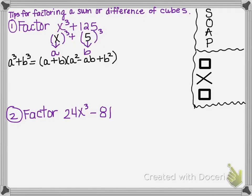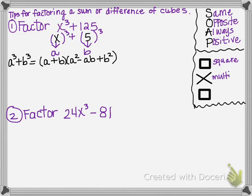Now that's what you would have to remember, but these tips are hopefully going to help you remember that formula. The first tip is to memorize the word SOAP. SOAP stands for Same, Opposite, Always Positive. That's going to help you remember where the pluses and minuses go in the formula. The next thing that's going to help you is 'square, multiply, square.' That tells you what you do with the a and the b values in the formula. So let's go ahead and write our final answer.